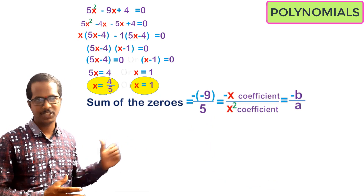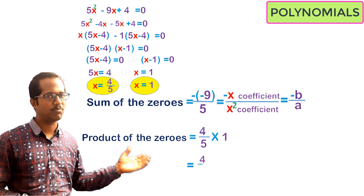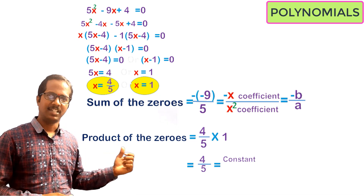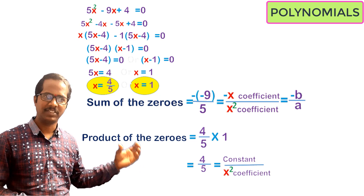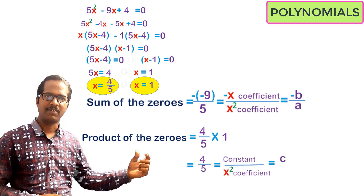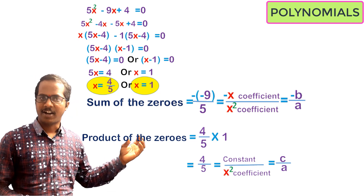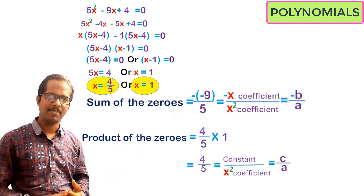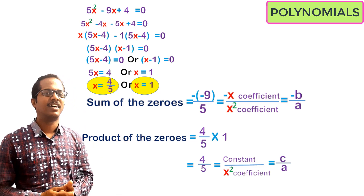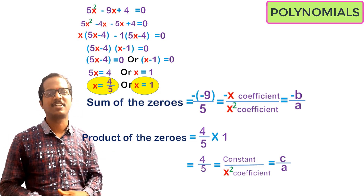Now let us find the product of these two zeros: (4/5) × 1 = 4/5. Observing this fraction, 4 is the constant term and 5 is the x²-coefficient. So 4/5 is constant term divided by x²-coefficient, confirming the product of zeros equals c/a. By taking various quadratic polynomials we can verify that the sum of zeros equals -x-coefficient by x²-coefficient and the product of zeros equals constant term by x²-coefficient.